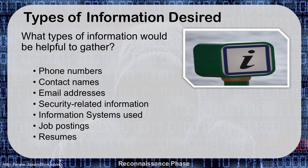So what types of information are we looking for? We're going to gather any information we can, but the things we're really focused on are things like phone numbers, contact names, email addresses, security-related information, information systems being utilized — things like whether they're using Windows or Linux — job postings, and resumes.